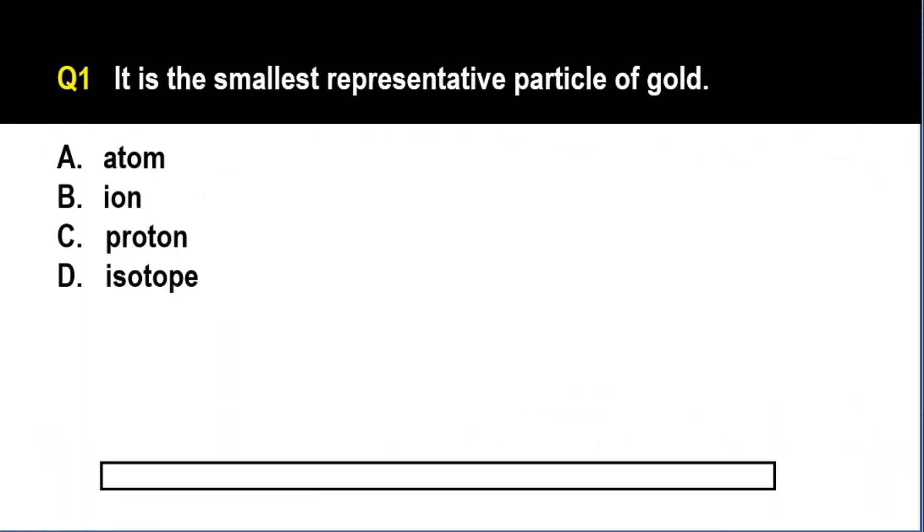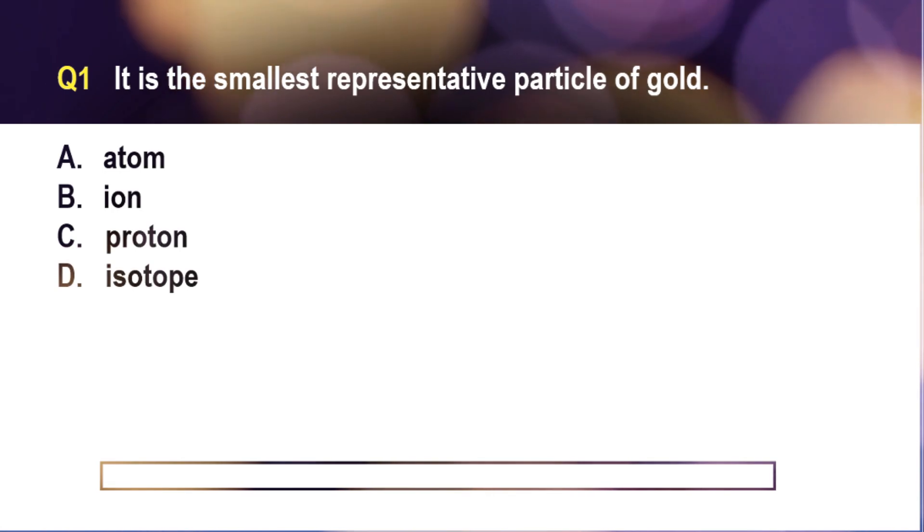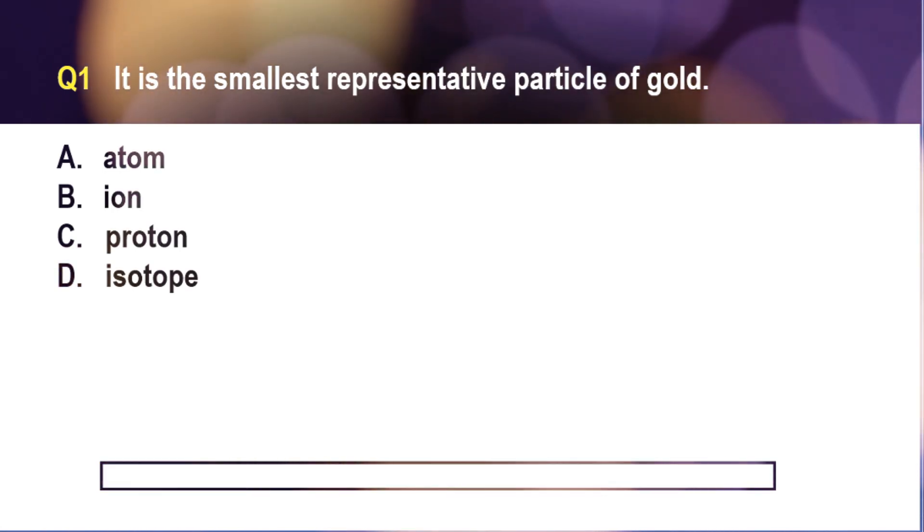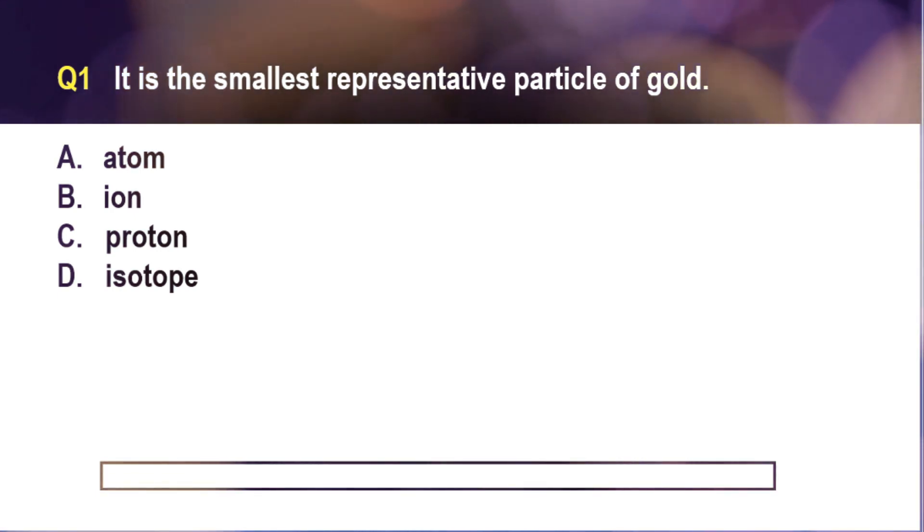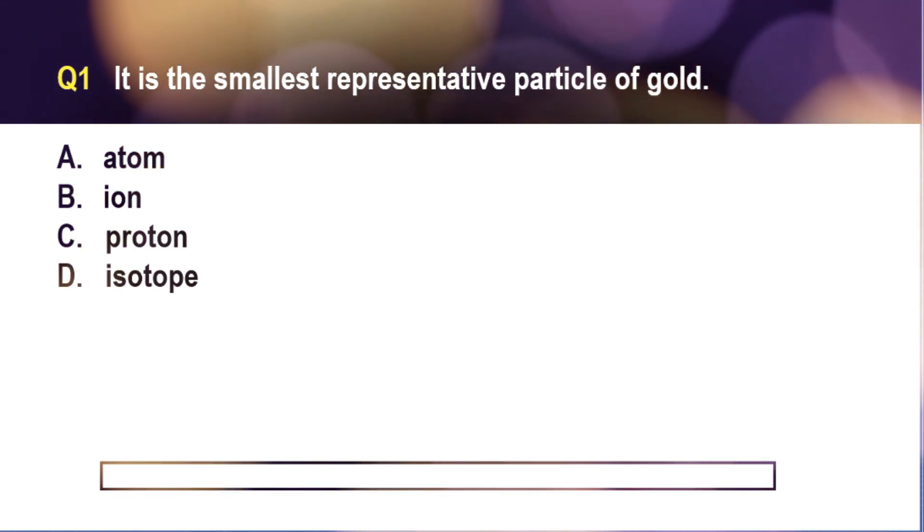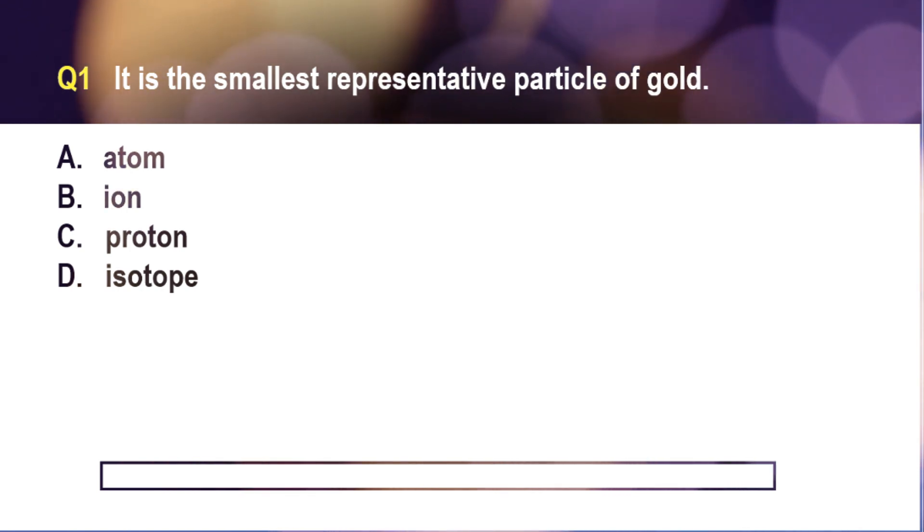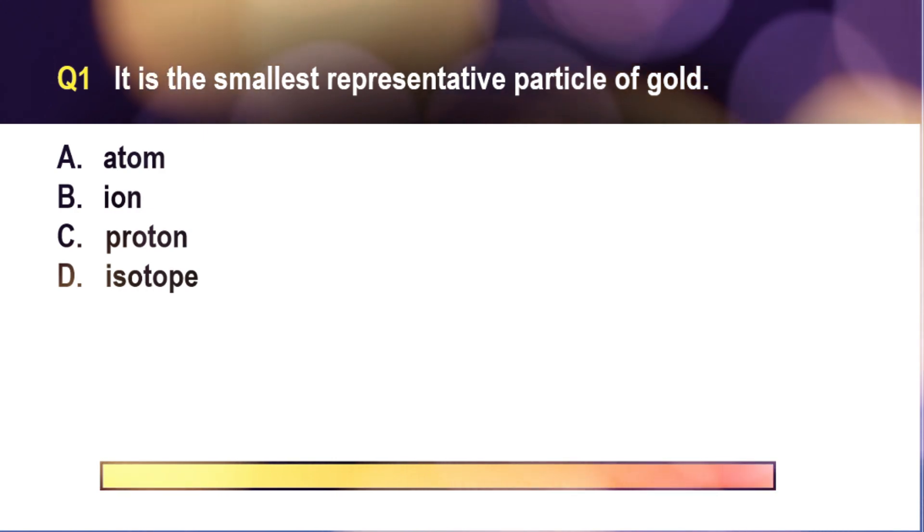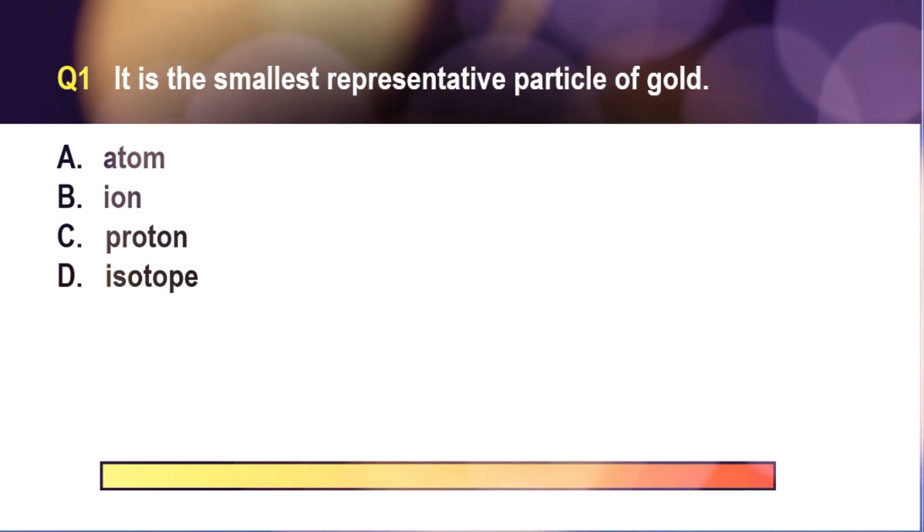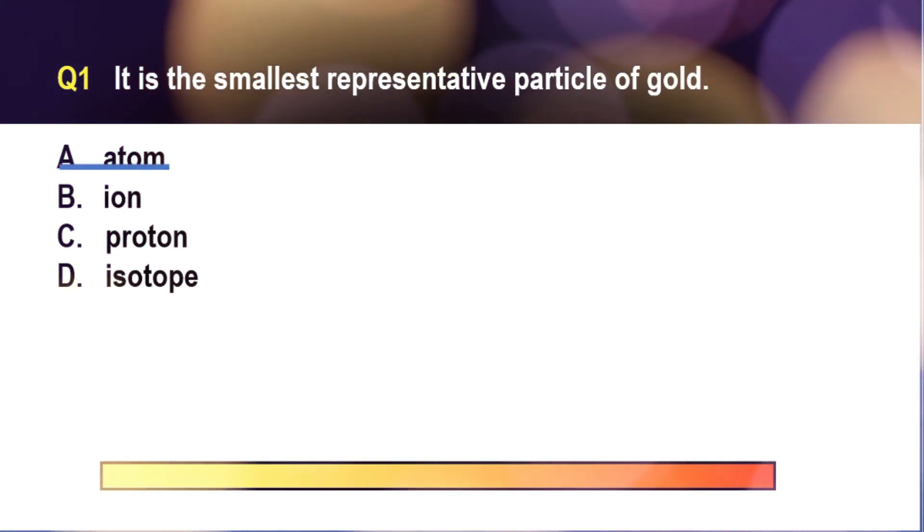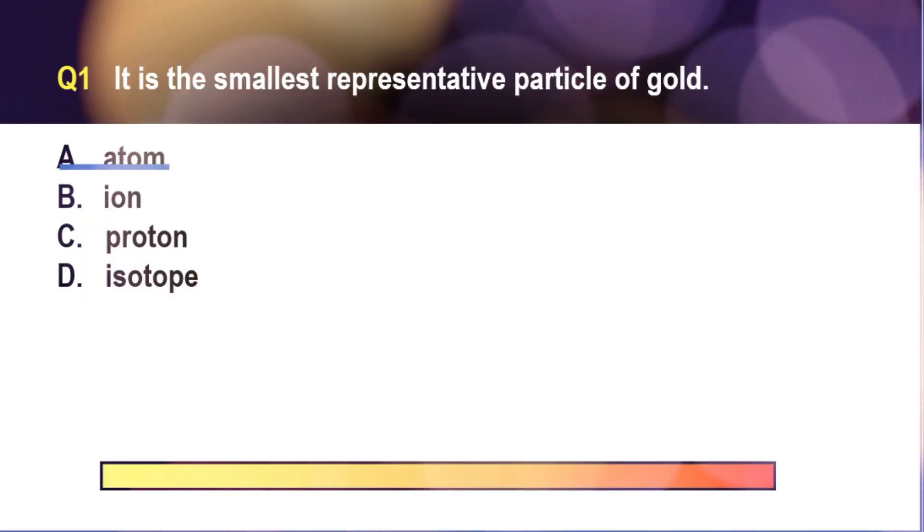For question number one, it is the smallest representative particle of gold. A. Atom, B. Ion, C. Proton, D. Isotope. Five seconds. The correct answer is letter A. When we say representative particle, it is the smallest piece of any element that retains the properties of that element. And for many elements, the representative particle is the atom.